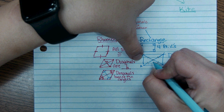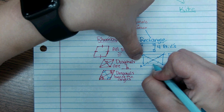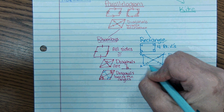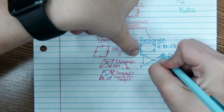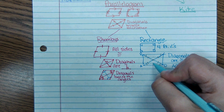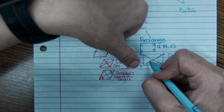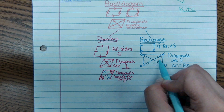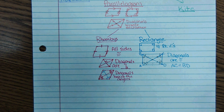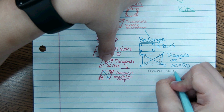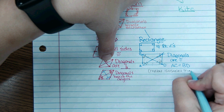Because the diagonals are congruent, the rectangle forms isosceles triangles. Since this segment is the same length as this one, you have an isosceles triangle, and the two base angles are equal. The two triangles on opposite sides are congruent and share all their properties because opposite sides of the rectangle are equal. This applies to all four triangles formed by the diagonals.